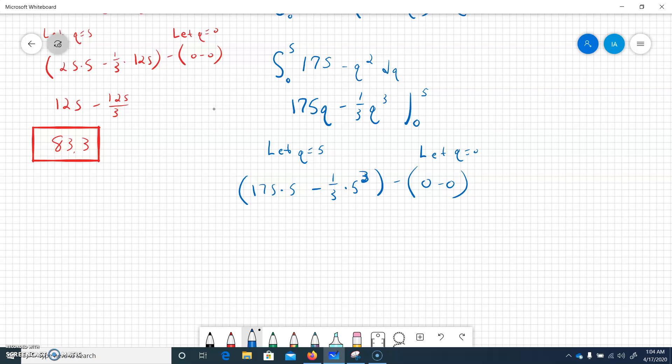So we plug it in, it'll be 0 minus 0, so that's not super important. Well, it is important, but it doesn't really change anything. So now I'm going to pick up my calculator again. 175 times 5 is 875, 5 cubed is 125, we'll divide that by 3, minus 41.7. So we're going to say 875 minus 41.7, so we will get 833.3.